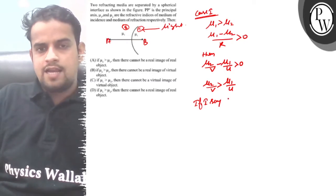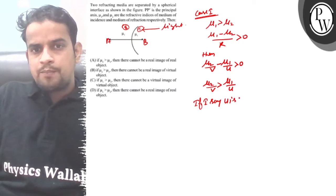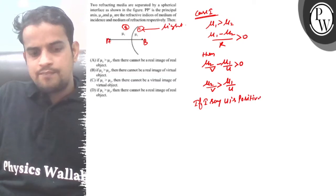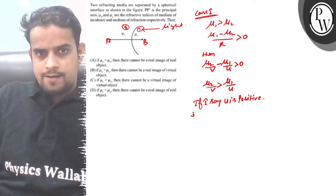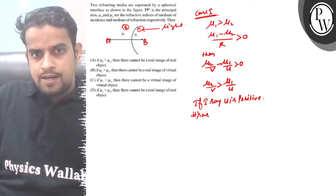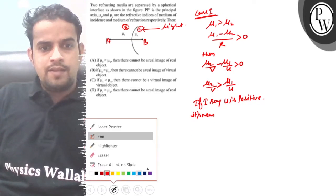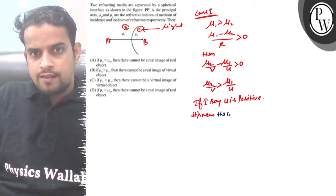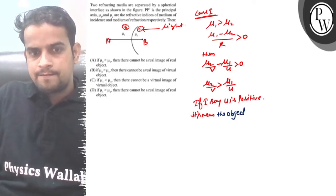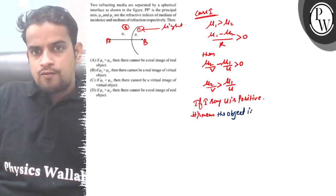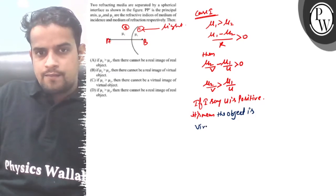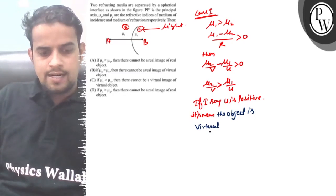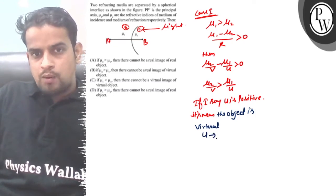If I say u is positive, it means the object is virtual. U is positive.